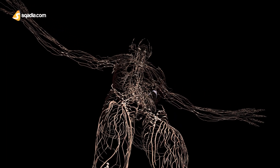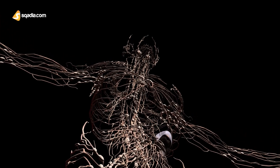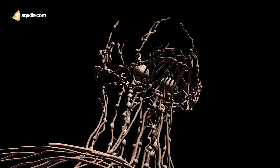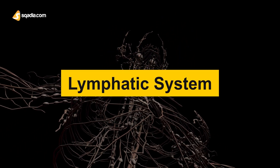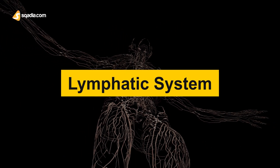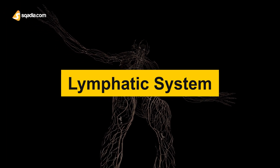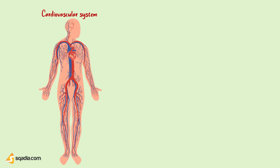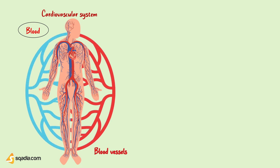Today we are going to discuss another organ system with tubular networks, just like the cardiovascular system. That system is named the lymphatic system. Although it is the most underestimated system of the body, it is practically a very vital system responsible for some significant actions. Just as the cardiovascular system transports blood throughout the body via a network of tubular structures called blood vessels.